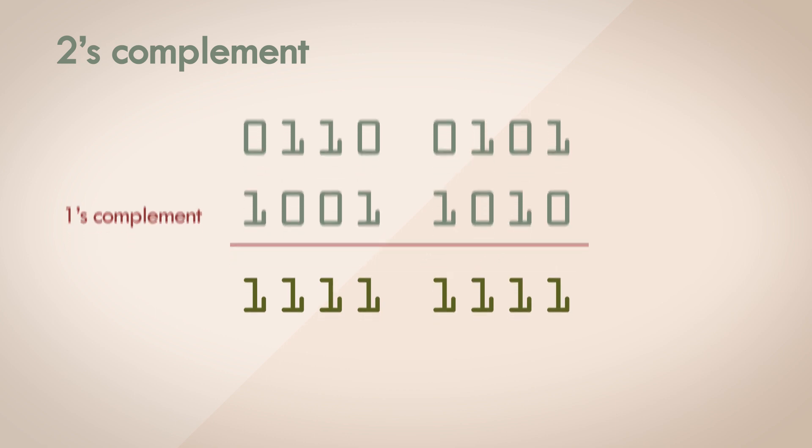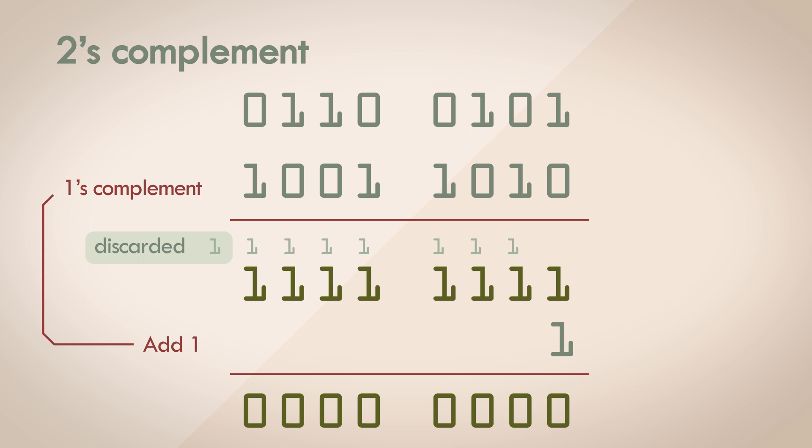If you take any n bit number, and then add it with its 1's complement, you will end up with the largest number that n bits can represent. What if we add 1 to this? We get an overflow. 8 bits can no longer hold this value. The number resets to 0, and the overflow that's supposed to go to the 9th bit is discarded since there is no memory available for the 9th bit. Simply put, any n bit number added to the 1's complement plus 1 of the same number is 0. It's the same equation as before. Any number added to the negative of the same number is 0. So we can treat the 1's complement plus 1 as the negative number of the original.